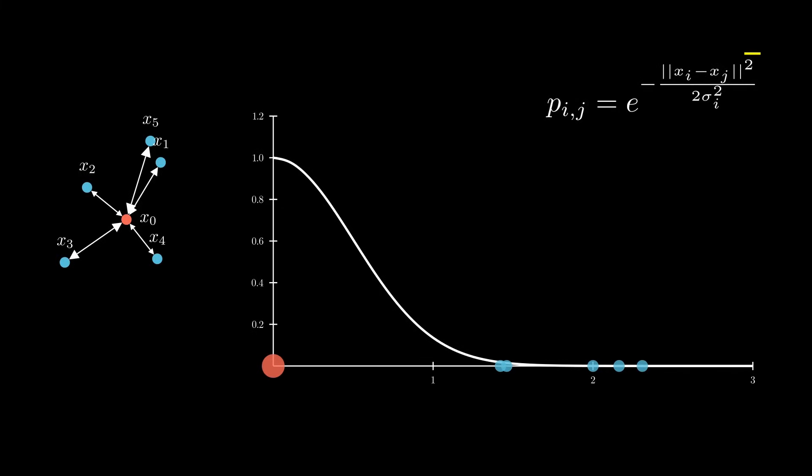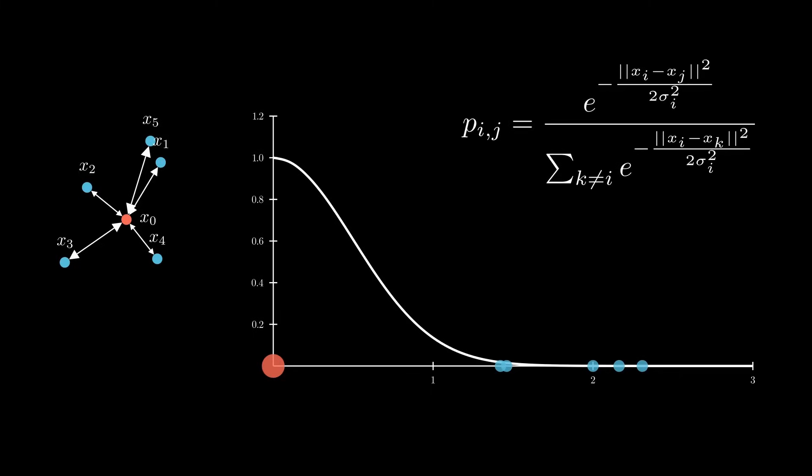Now that we have the probabilities for the neighbors of this point, we repeat the same process for each point in our high-dimensional representation. To make all these probabilities add up to 1, we normalize each Gaussian by the sum of all the others, which is very costly in terms of computations.